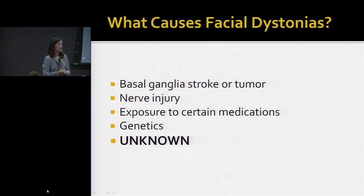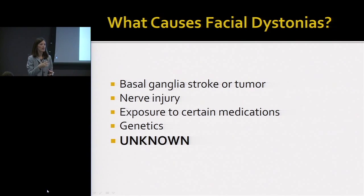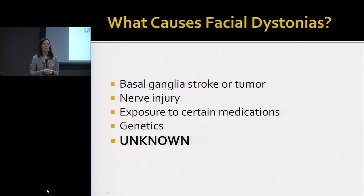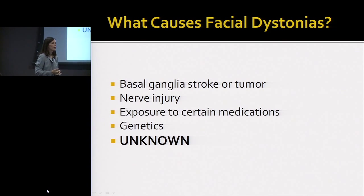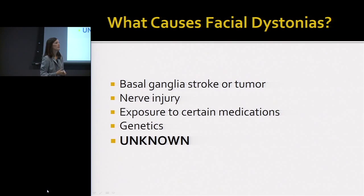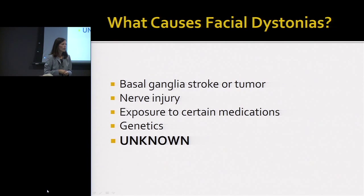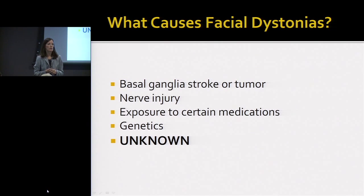There have been publications of people who've had facial dystonias due to basal ganglia strokes or strokes in the deep brain, and tumors in the deep brain. Nerve injury is fairly common as a cause for hemifacial spasm. We also know that certain medications can cause dystonias — most infamously the antipsychotics, which most commonly cause oromandibular dystonia. There are some genetic factors and predispositions to dystonia, but the biggest cause of facial dystonias for most people is unknown.